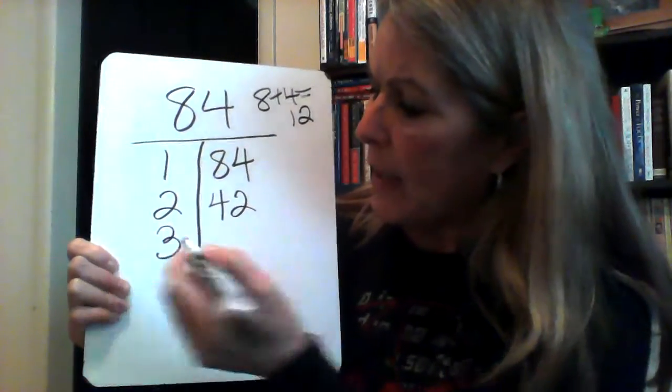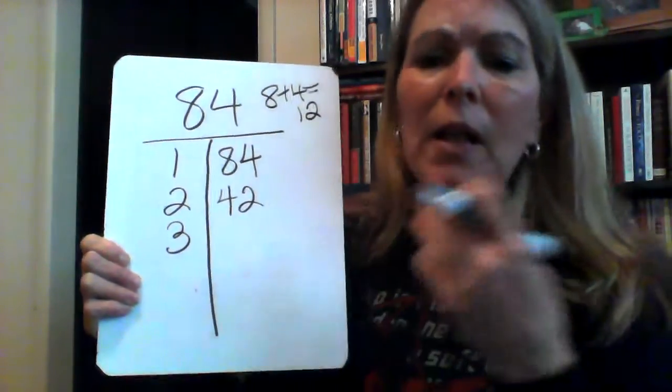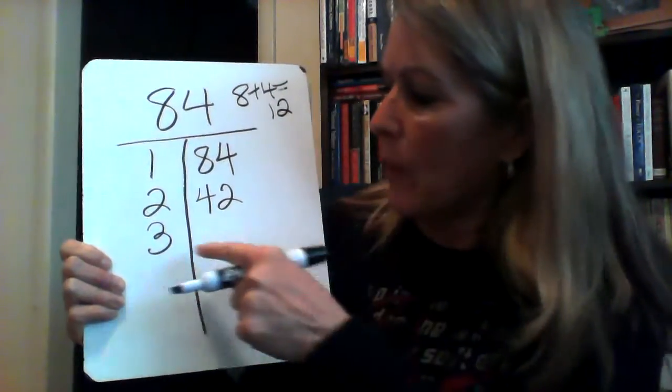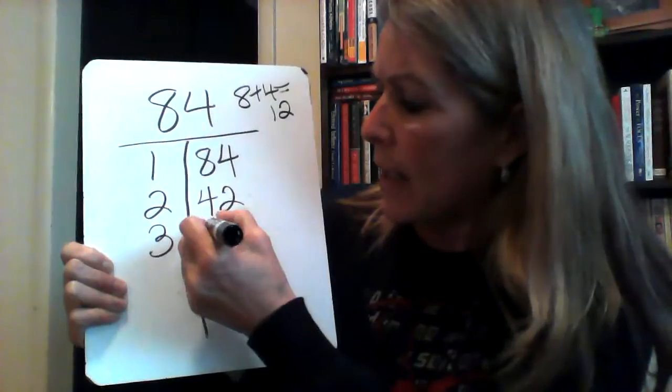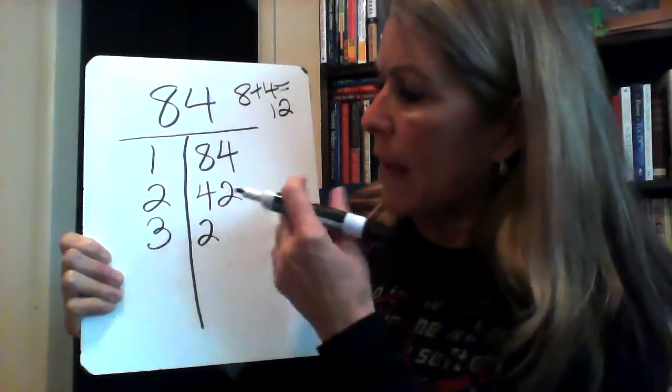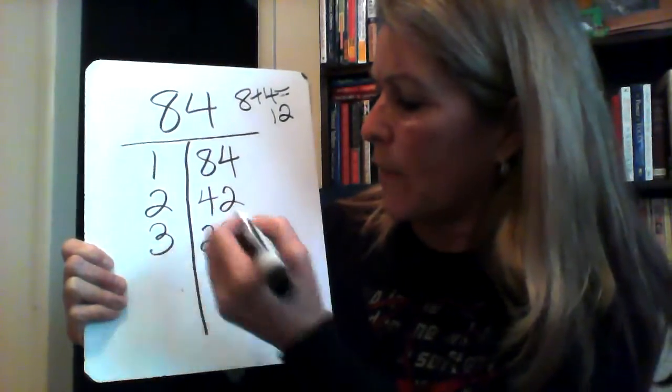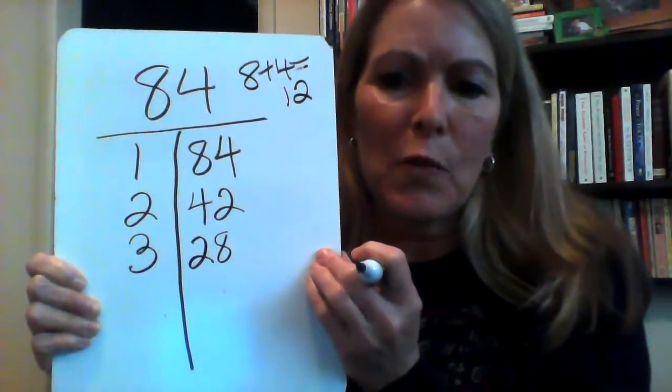So I figure out 3 times what is 84? So I think about it for a few minutes, and I realize that 3 times 20 is 60, and then that leaves me 24. So 3 times 8 is 24. So I've got 3 times 28.